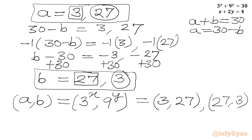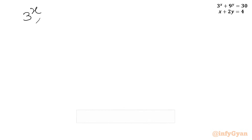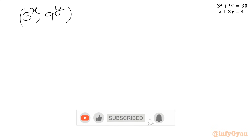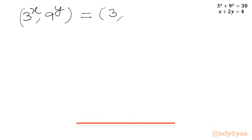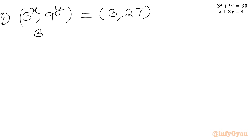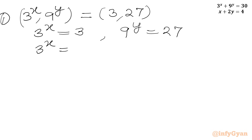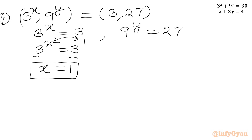Let us calculate x and y now. Considering (3^x, 9^y) = (3, 27) first. Equating 3^x = 3 = 3^1, and since the bases are the same, we equate the exponents to get x = 1.